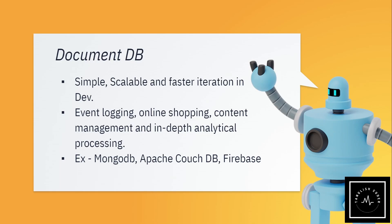If we look at MongoDB, it is a document DB type. The development phase is faster, and multiple iterations — multiple versions — can be used continuously. At that time, we will use document DB, which makes development easier and makes the developer feel more comfortable. Use cases include logging, online shopping, content management, and analytical processing. Examples of document DBs are MongoDB, Apache CouchDB, and Firebase, which is Google's cloud platform.